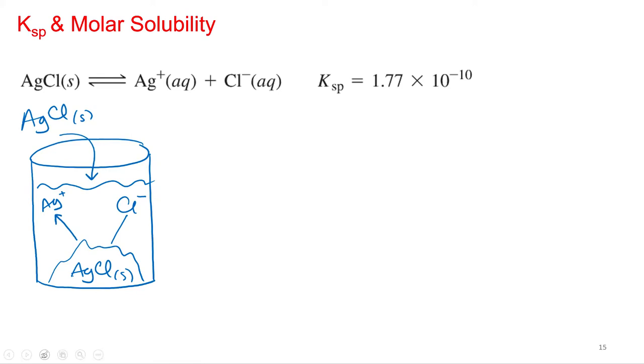Now, of course, since it's an equilibrium system, we could have a K, and we call it the Ksp for the solubility product constant, because the soluble ions are on the product side.